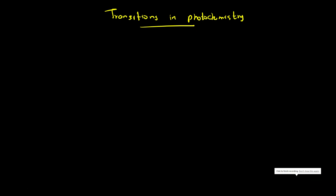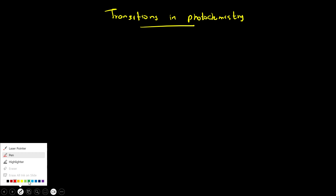Welcome back to another video. We are going to talk about transitions in photochemistry. This is our third video in our photochemistry video series. If you have not watched our previous videos where we talked about basic concepts and Jablonski diagrams, I highly recommend you go back and watch those. In this video we are going to talk about the possible transitions for a given organic molecule.